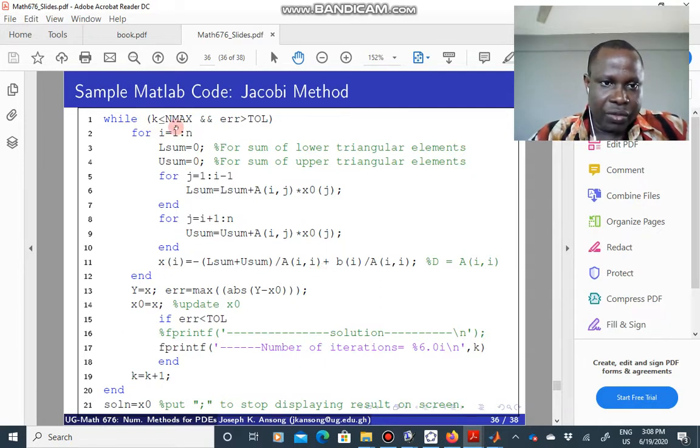So this is what this is doing, summing down the lower triangular terms, summing the upper triangular, and this is the formula for the Jacobi. All right, so you iterate until if k is less than the k max or the error is greater than the tolerance. And then it stops, and then you can print out the number of iterations.